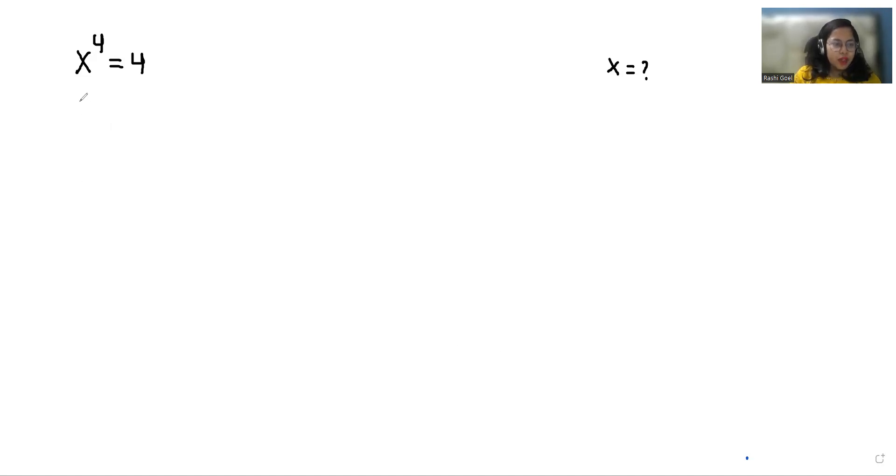So we can write this as x^4 - 4 = 0. Now x^4 we can write it as (x²)² minus similarly 4 as 2² equals 0.